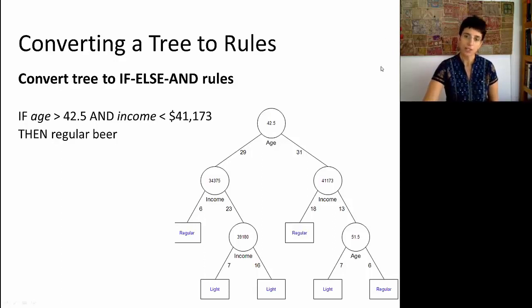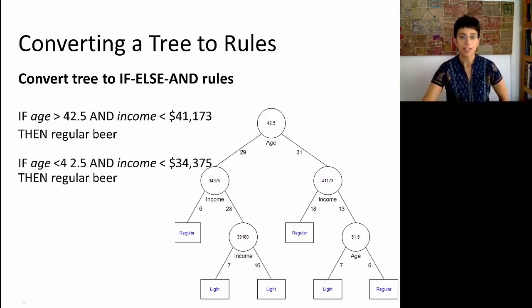we can convert the predictor to output information in the following fashion. I can say that if age is above 42 and a half years and income is below $41,173, then I'm more likely to prefer regular beer. So I can write this in the form: if age is above 42.5 and income is below 41,173, then regular beer. I can do the same thing for each one of the terminal nodes, so each terminal node will generate a rule. For example, I can go to the younger people and look at the lower income of these younger people and find the label regular in the tree node.